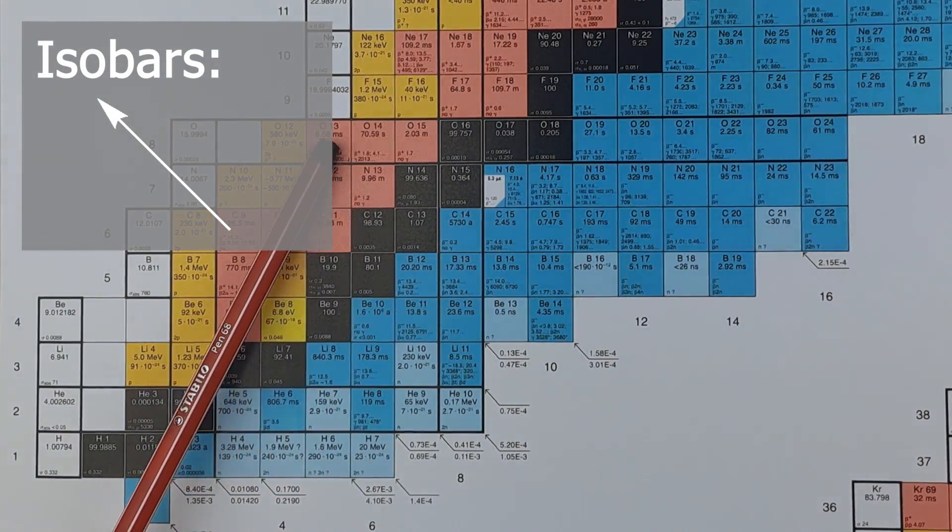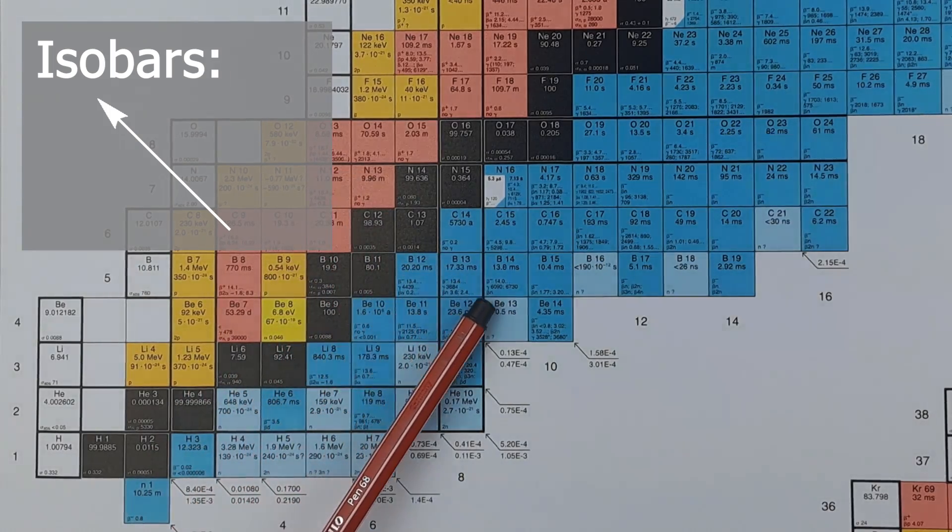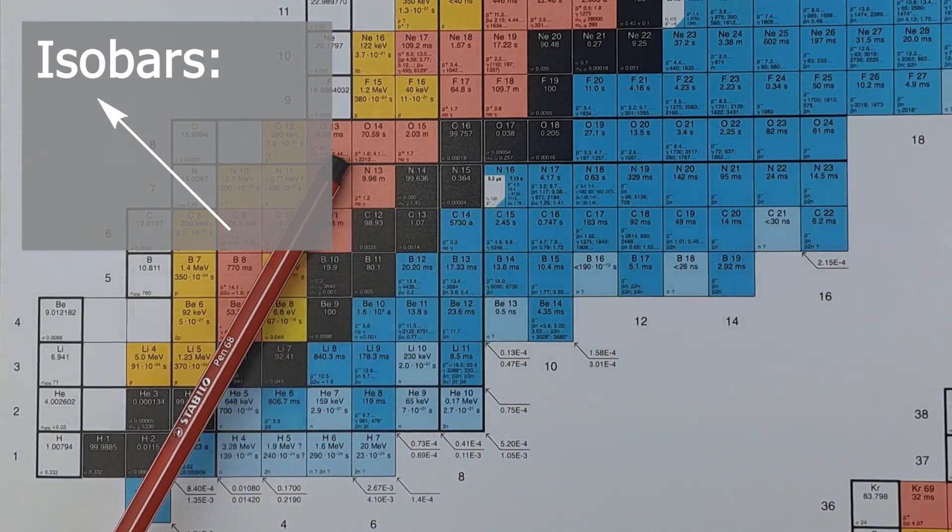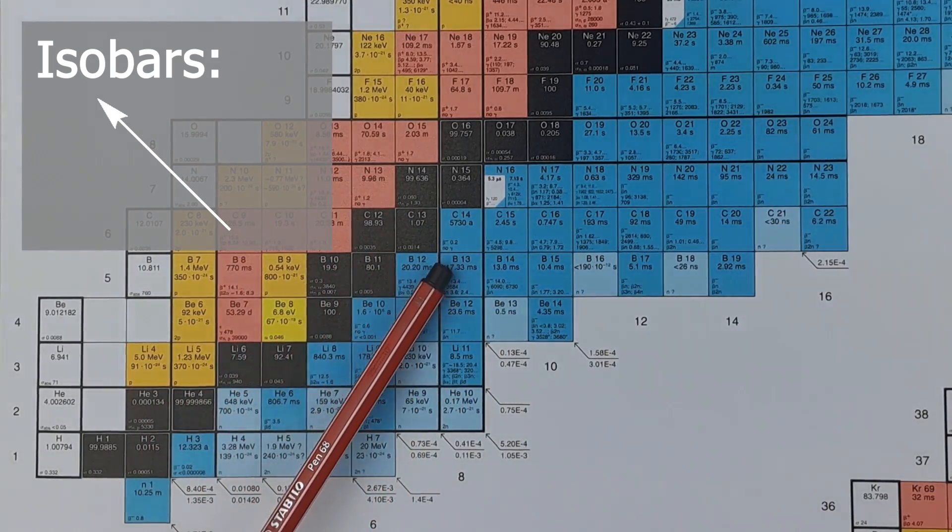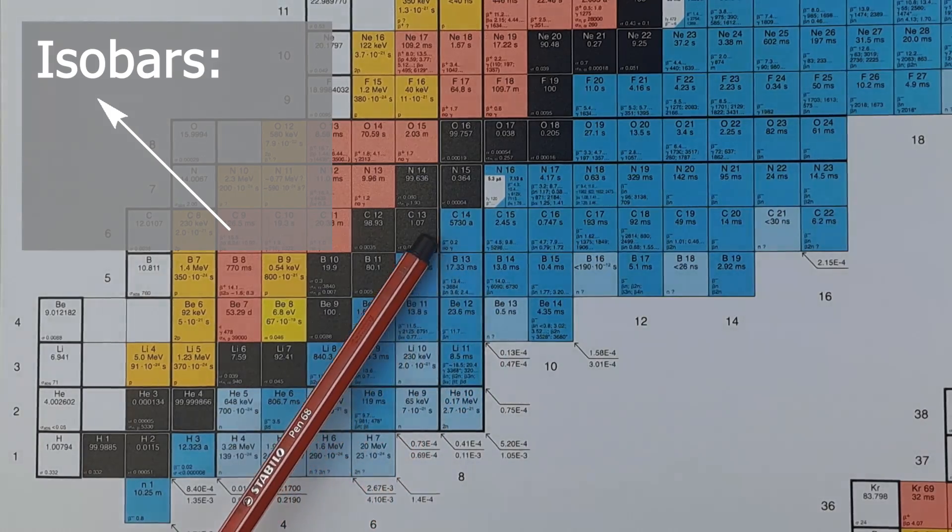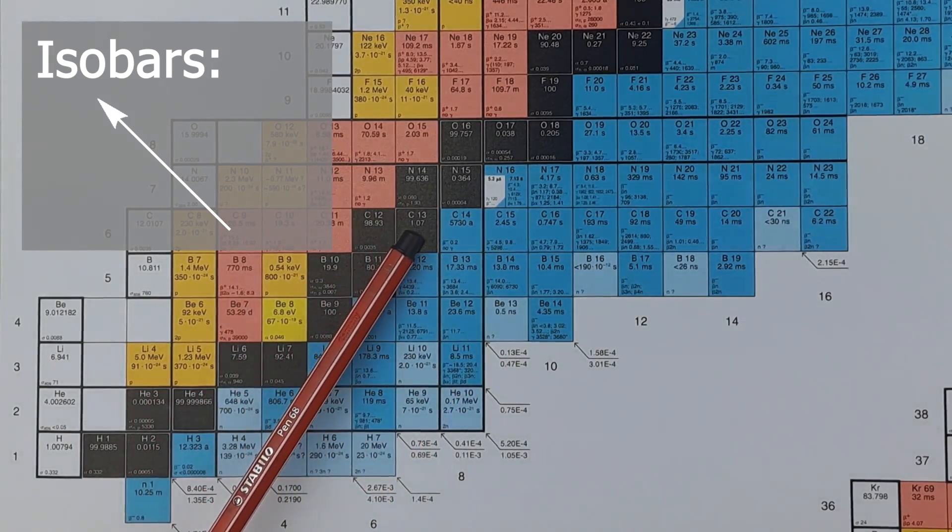Now, there's one axis missing and it's the one where all nuclides have the same atomic mass. This is called the isobar. It extends from the bottom right to the top left across the chart of nuclei. It's important when it comes to chain yields.